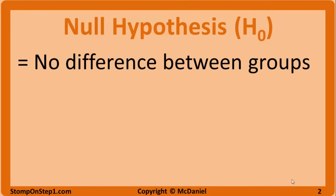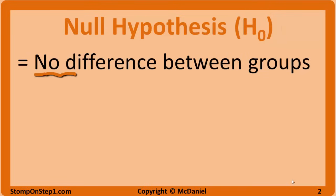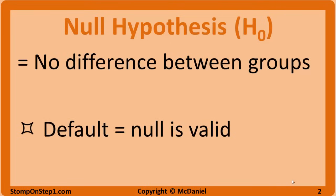We will start with the null hypothesis, which is represented by H subscript 0. The null hypothesis states that there is no difference between the groups being studied. In other words, there is no relationship between the risk factor or treatment being studied and the occurrence of the health outcomes. For example, if we are comparing a placebo group to a group receiving a new diabetes medication, then the null hypothesis states that the blood sugar or medical complications would be roughly the same in each group.